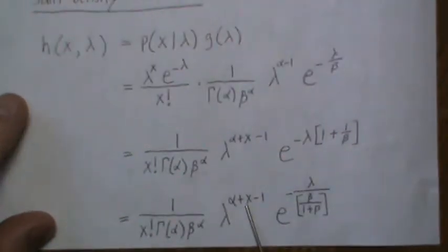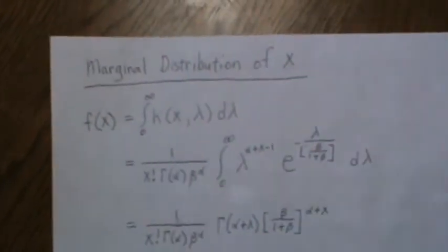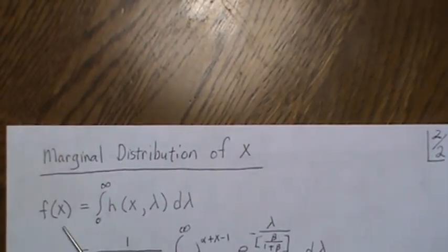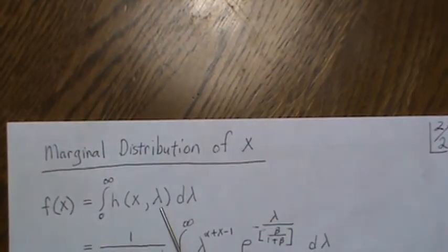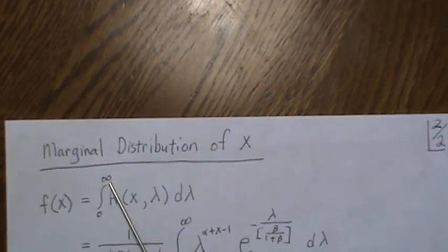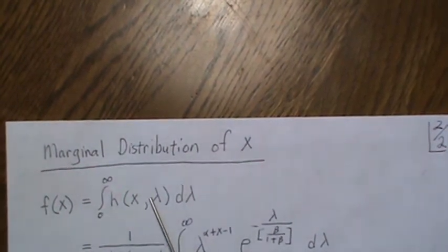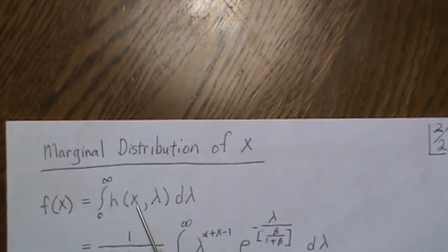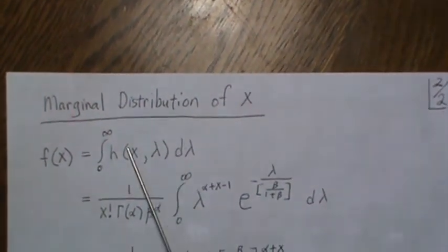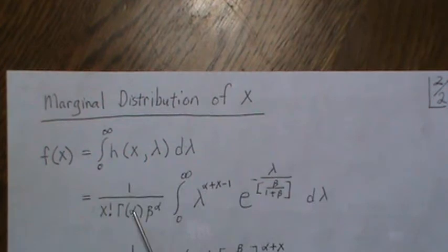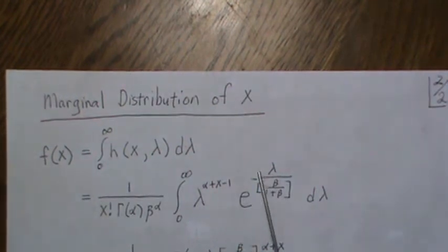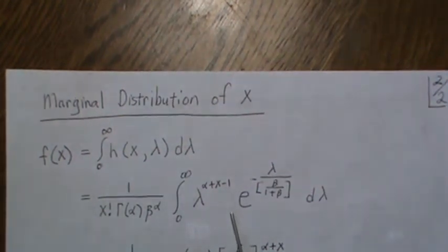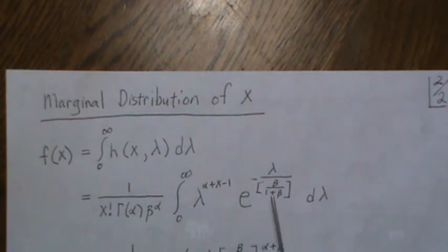Now when we find the marginal distribution of X, what we do is we introduce a variable lambda and then integrate it out. But this we just found was the joint density for X and lambda, and so if we plug that in here, I already factored out the pieces that don't deal with lambda and the pieces that do deal with lambda.